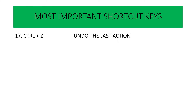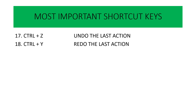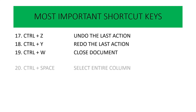Next is Ctrl Z. Ctrl Z की मदद से हम हमारी last action को undo कर सकते हैं. Undo का मतलब — suppose गलती से कुछ delete हो गया तो Ctrl Z press करके वापस ला सकते हैं. Ctrl Y is used to redo the last action. Ctrl W is used to close our document — document को close करने के लिए Ctrl W का use करते हैं.